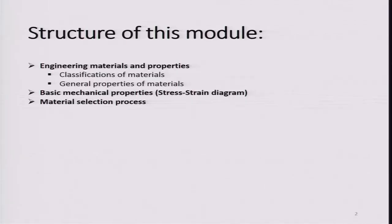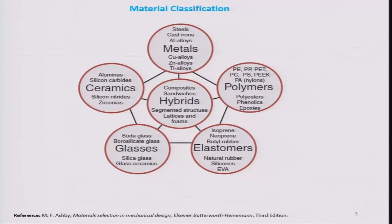The structure of this module is as follows: first we will study some engineering materials and their properties, then their classification, then general properties of materials, and then mechanical properties such as the stress-strength diagram. After that we will study the material selection process.